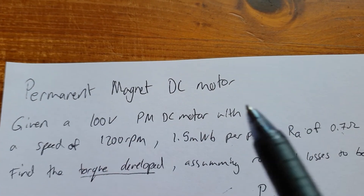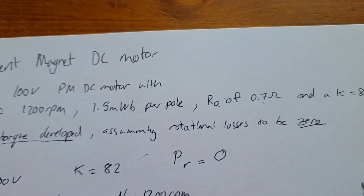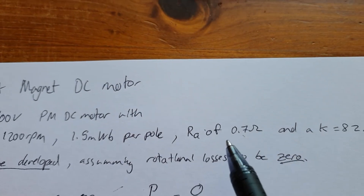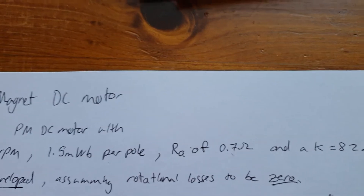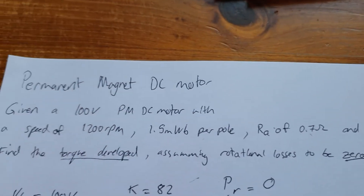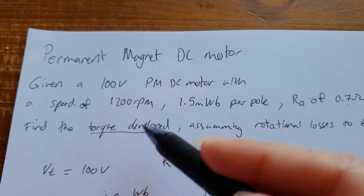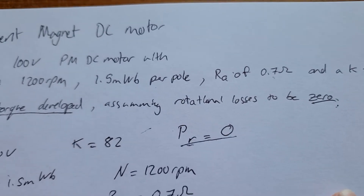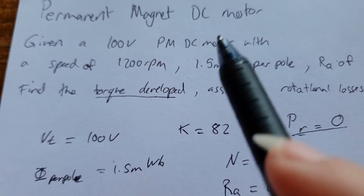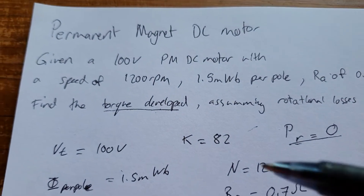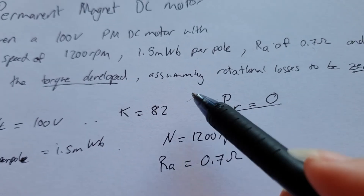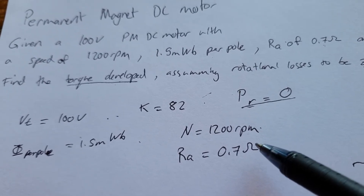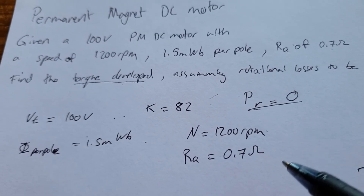So given a 100 volt PM DC motor with a speed of 1200 rpm and a 1.5 milliwebers flux per pole, an armature resistance of 0.7 ohms and a K of 82, find the torque developed assuming rotational losses to be zero. That means PR equals zero. I've rewritten all our data: 100 volts, 1.5 milliwebers, K = 82, 1200 rpm, and armature resistance of 0.7 ohms.